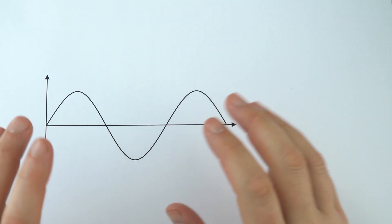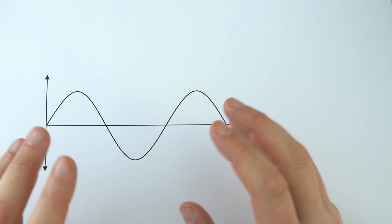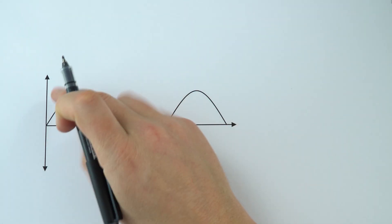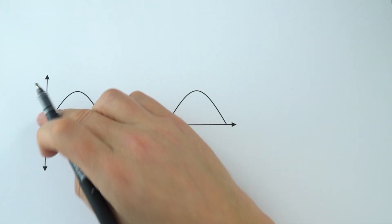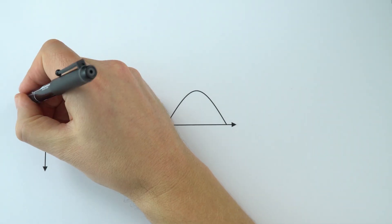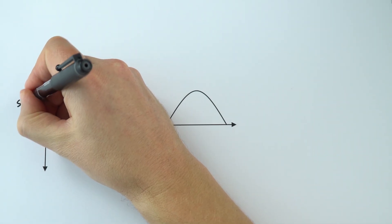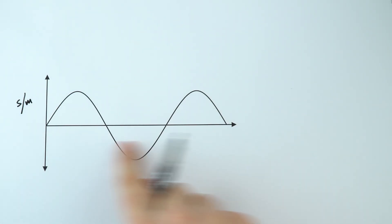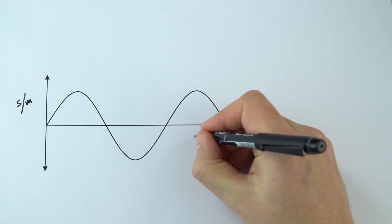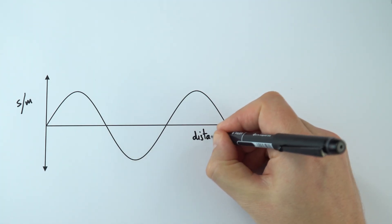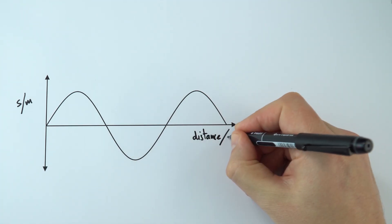This is very much the side-on view of the wave if it was frozen in time. What we can label on the y-axis, the vertical axis here, is the displacement of that wave at any point. So this is our displacement measured in metres. And along here what we have is our distance along the wave, also normally measured in metres.